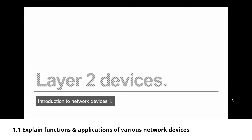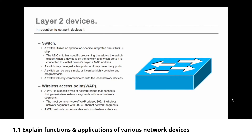Now let's move on to layer two devices. The first layer two device is the switch. A switch utilizes an application-specific integrated circuit chip — an ASIC chip. The ASIC chip has specific programming that allows the switch to learn when a device is on the network and which ports it is connected to, via that device's layer two MAC address. That's what makes a switch a layer two device. A switch can be very simple or highly complex and programmable, but it can only communicate with local network devices.